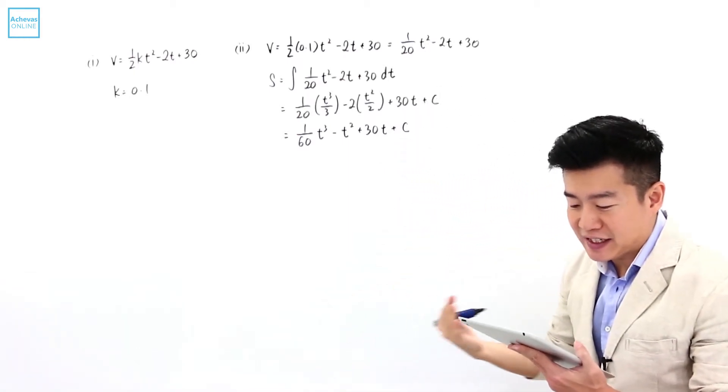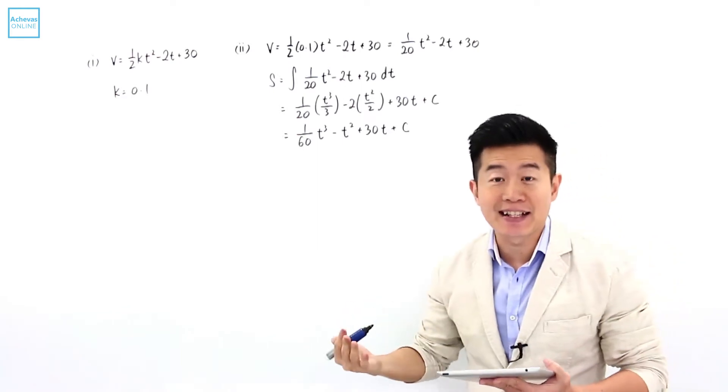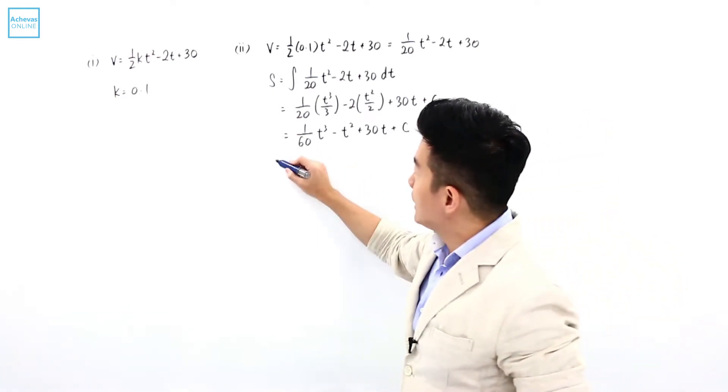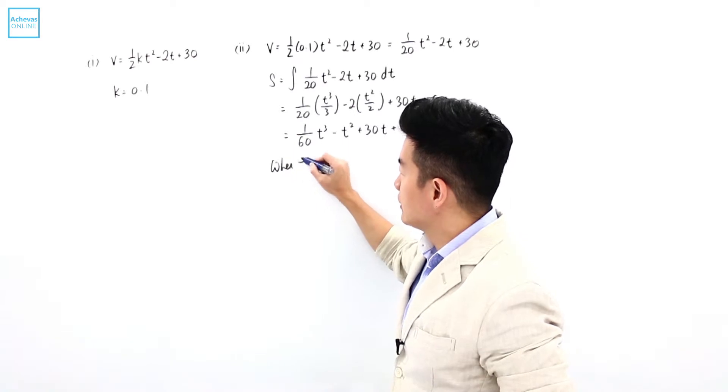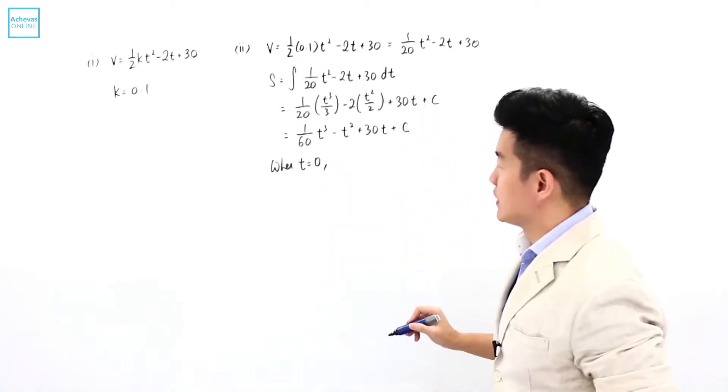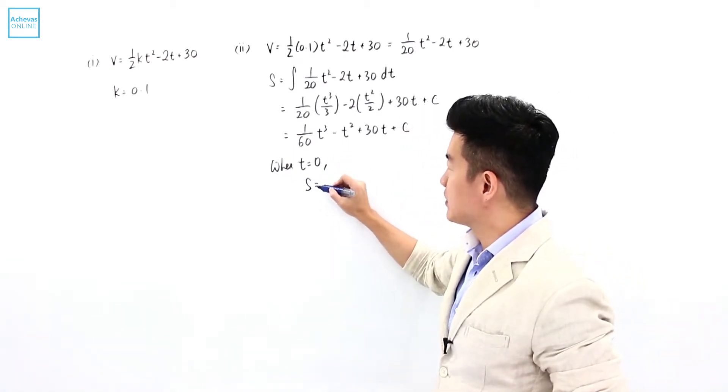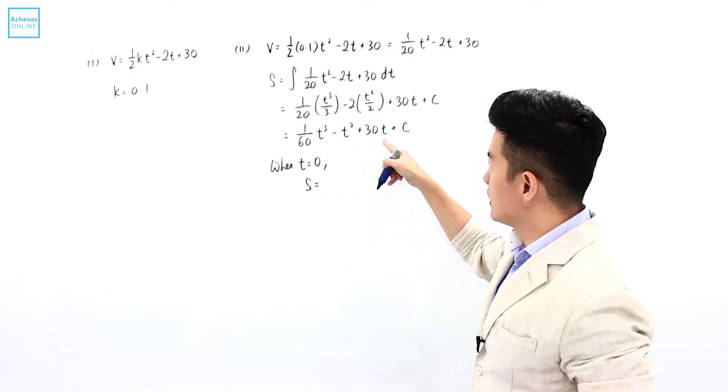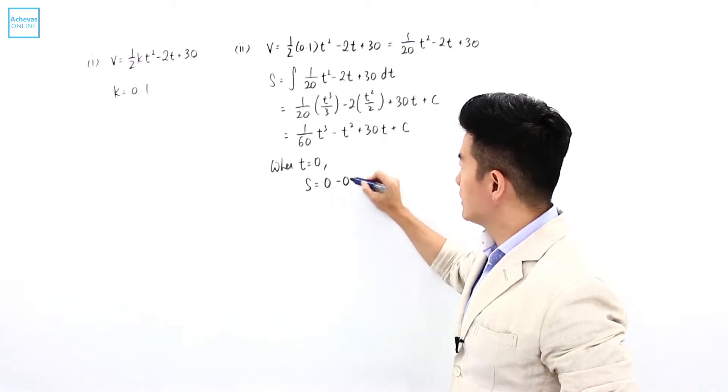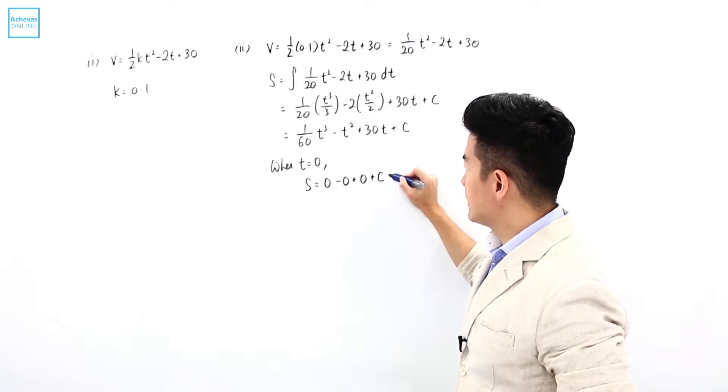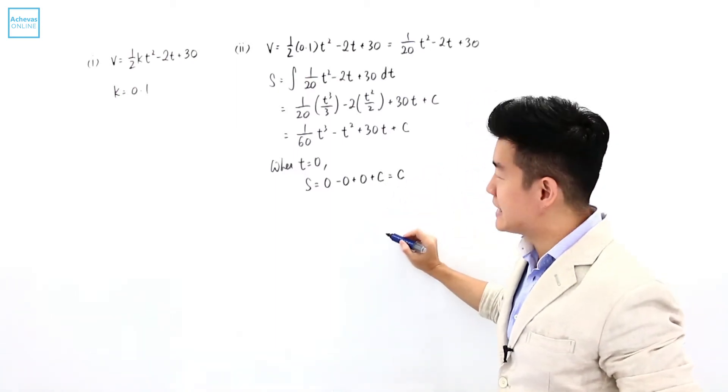We want to make use of this to find the distance between signals x and y. When it is passing through signal x, that is when t is equal to 0, which means that the displacement, substituting 0 into here, is 0 minus 0 plus 0 plus c. So the displacement is just c.